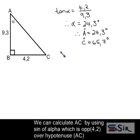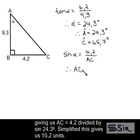We can calculate AC by using sine of alpha, which is opposite side 4.2 over the hypotenuse, which is AC. And this gives us AC is equal to 4.2 divided by the sine of 24.3 degrees. And simplified, this gives us 10.2 units.